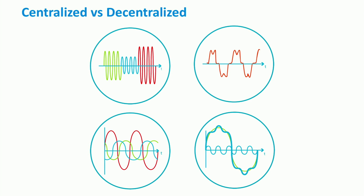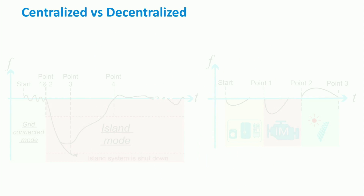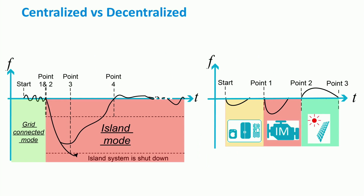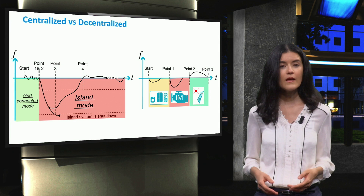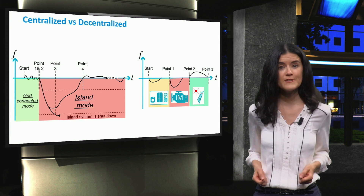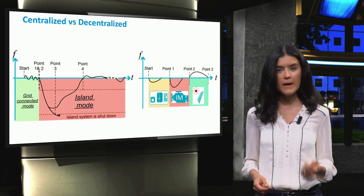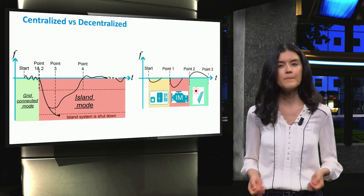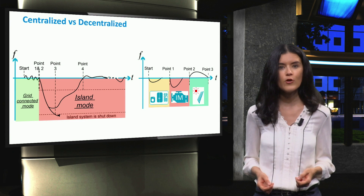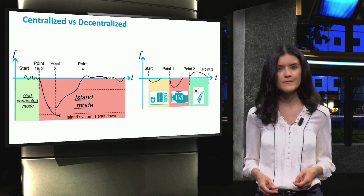To ensure this continuity, we discuss the islanding and black start processes for microgrids. We will finish this part with the ancillary services, demand response and potential business models for microgrids.